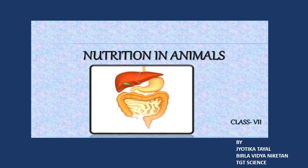From the stomach, the food goes into the small intestine. It is a highly coiled tube, about 7.5 meters long, present in the lower abdomen. It secretes intestinal juice and also receives secretions from the liver and pancreas. The liver secretes bile juice, the pancreas secretes pancreatic juice, and intestinal glands secrete intestinal juice. The inner walls of the small intestine have a large number of finger-like projections called villi for absorption of nutrients from the food.